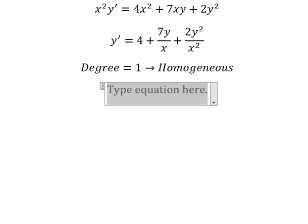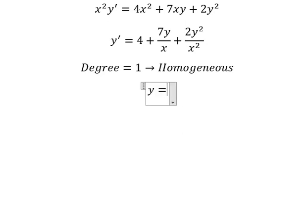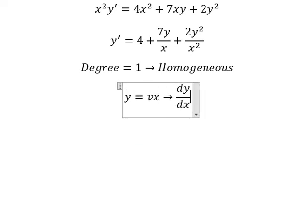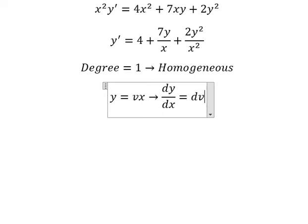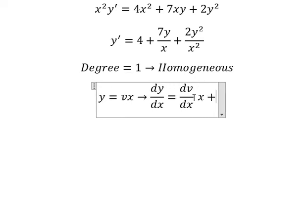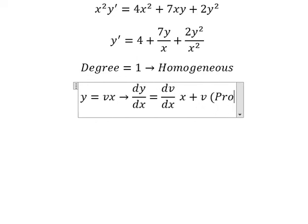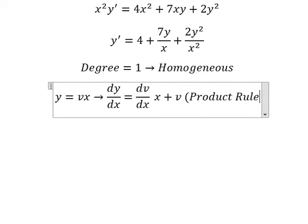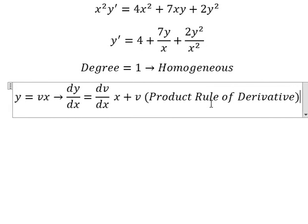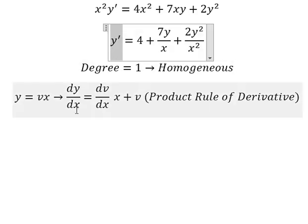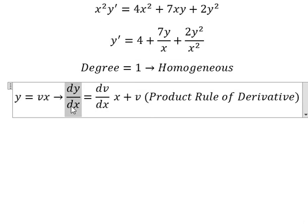So I will put about y equal to vx. So if we do the derivative for both sides, you got about dy over dx. We do the derivative of v, you got about dv over dx multiplied by x. Plus the derivative of x, you got about v. This is about the product rule of the derivative. The derivative of y represents dy over dx.